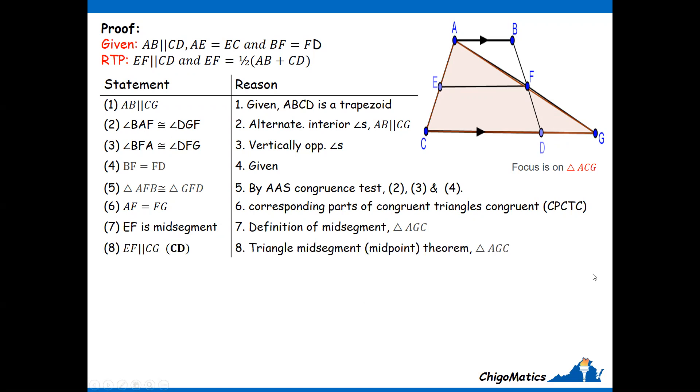If it is the midsegment or midpoint, then we can conclude that EF is parallel to CG. But saying CG is the same as CD because it's simply an extended line. What allows us to give that conclusion is based on the triangle midpoint theorem. Looking at our focus triangle, once we have done that, we have achieved this first problem.